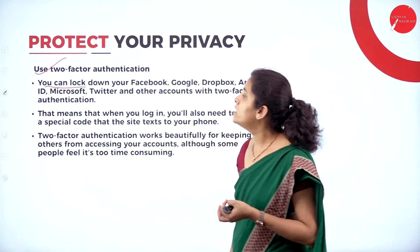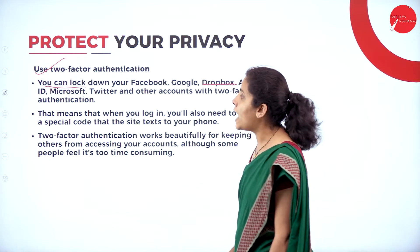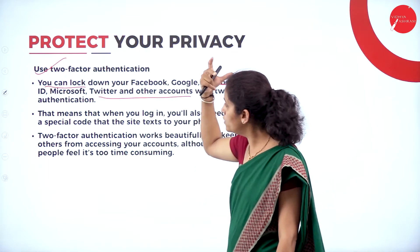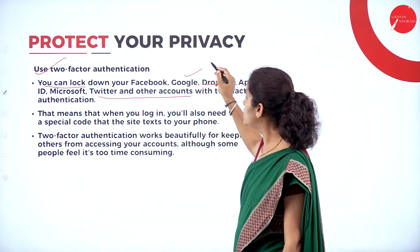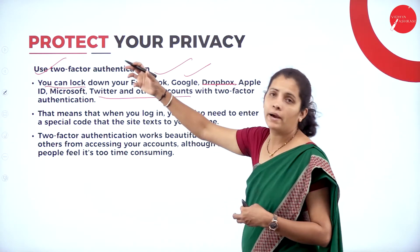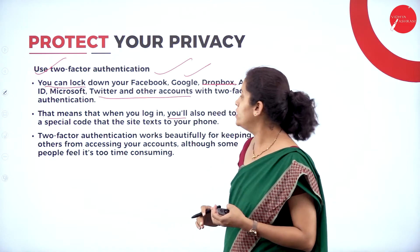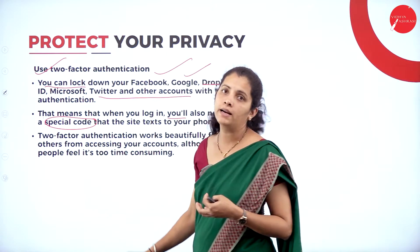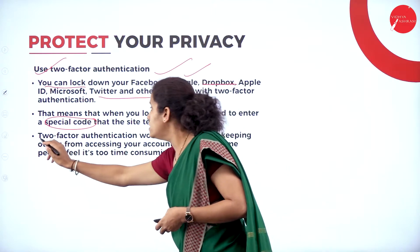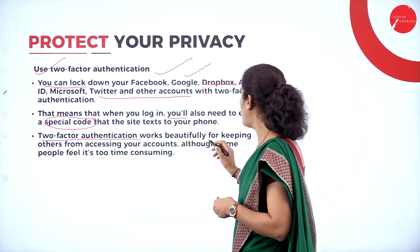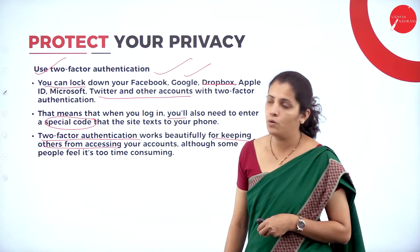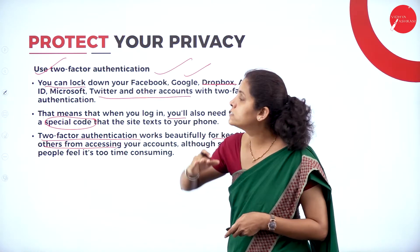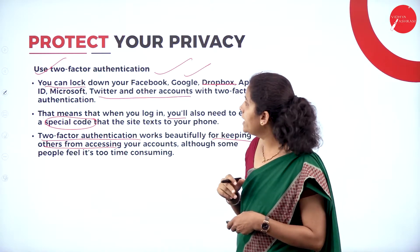You can enable two-factor authentication for Facebook, Google, Dropbox, Apple ID, Microsoft, Twitter, and other accounts. When you log in, you also need to enter a special code — this is the one-time password (OTP). Two-factor authentication works beautifully for keeping others from accessing your account and provides better privacy for your sensitive data.